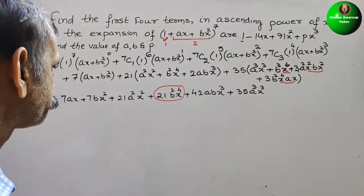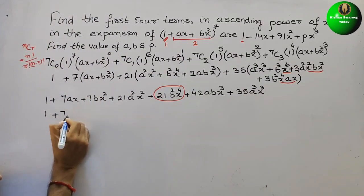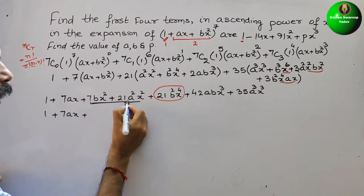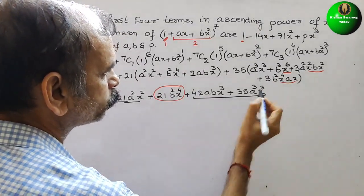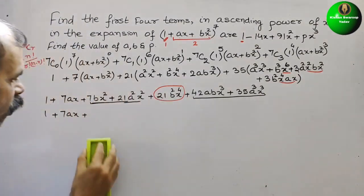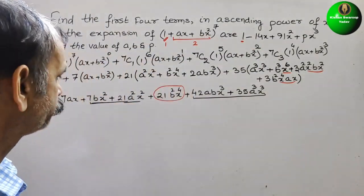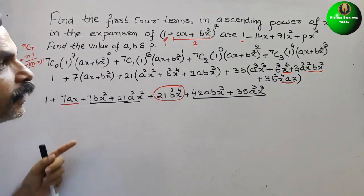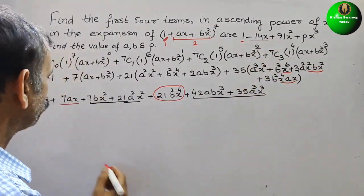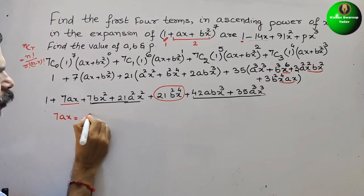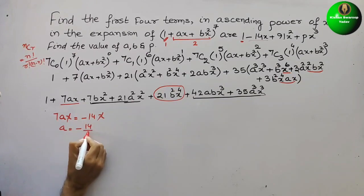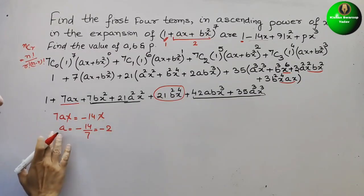Now just solving and collecting terms: 1 + 7ax + (7bx² + 21a²x²) + (42abx³ + 35a³x³). Comparing the x coefficient: 7ax = −14x, so a = −14/7 = −2. Therefore a = −2.